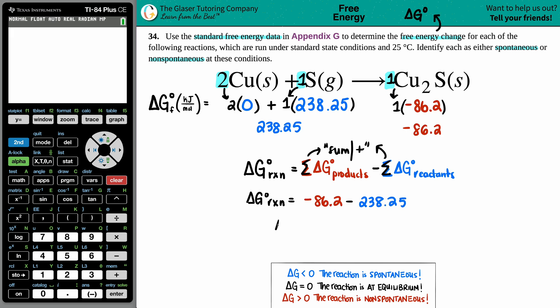I'm going to plug it into the calculator. Let's see what we get. Delta G for the whole entire reaction equals negative 86.2 minus 238.25. I'm going to enter that. We do get a full answer of negative 324.45.